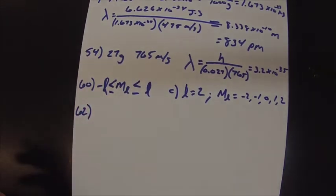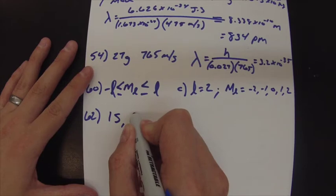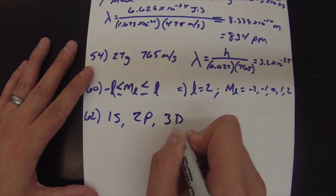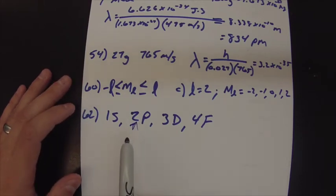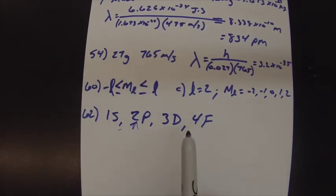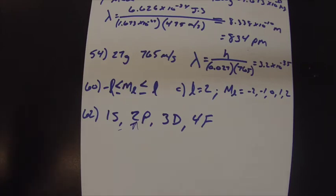Number 62 asks which combinations of n and L represent real orbitals. The rule: S orbitals start at n=1, P orbitals start at n=2, D orbitals start at n=3, and F orbitals start at n=4. So you can't have a principal quantum number for P less than 2, D less than 3, or F less than 4. It's a simple check — if you have any problems let me know.